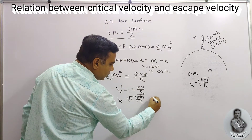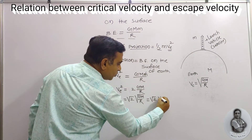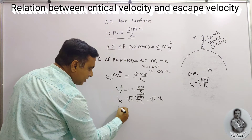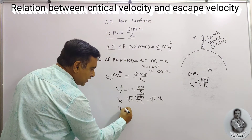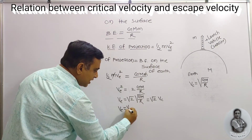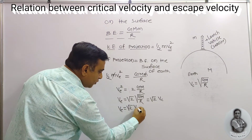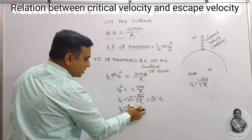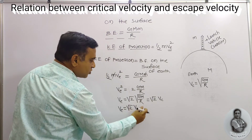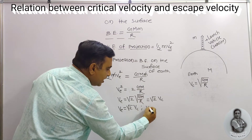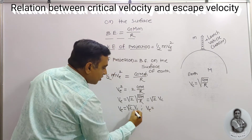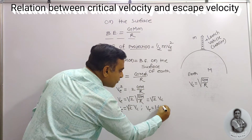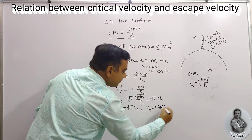Hence we got the relation: ve = √2 · vc. This equation may also be written as ve = 1.414 · vc.